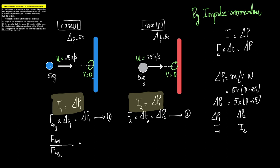For Case 1, Δp1 = mass × (final velocity − initial velocity) = 5 × (0 − 25). For Case 2, Δp2 = 5 × (0 − 25). This gives us Δp1 = Δp2, or in other words, impulse 1 is equal to impulse 2.